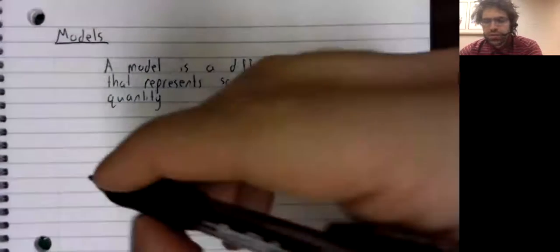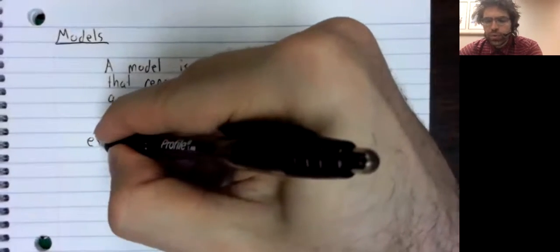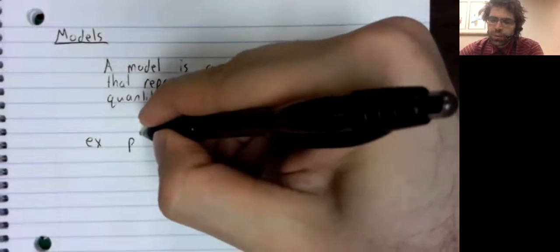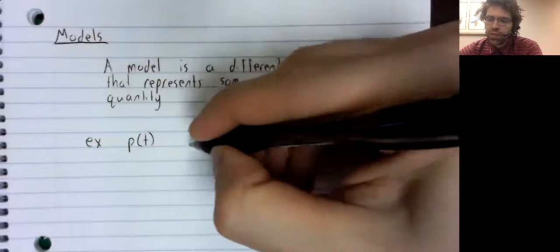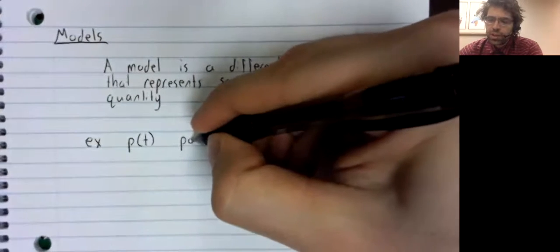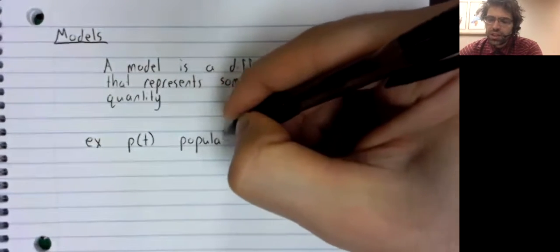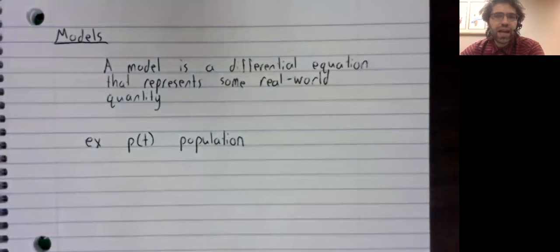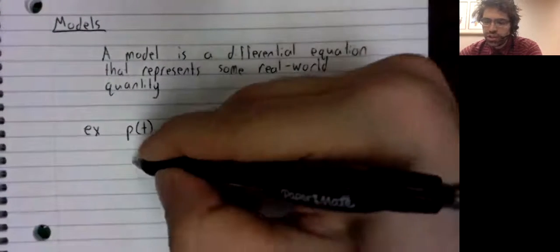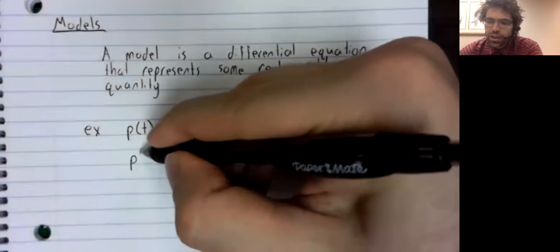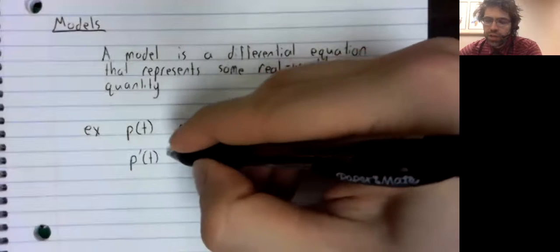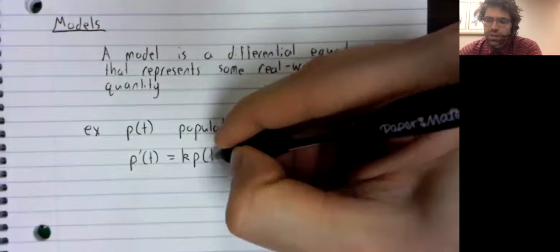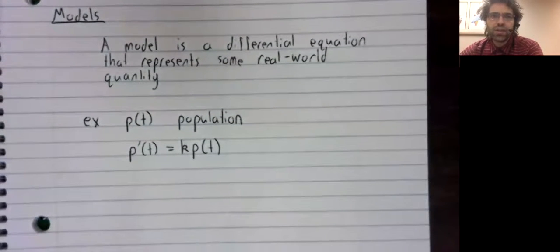And we have seen an example of a model, although we didn't use that word. We've come back a few times to P of T, where P of T is an animal population. And the differential equation is given by this.